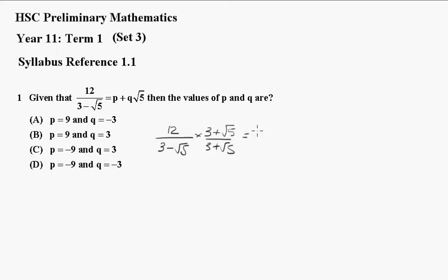Now this is going to be 12 times 3 plus root 5. And when I apply these two together, 3 times 3 is 9, minus root 5 times root 5 is just 5.